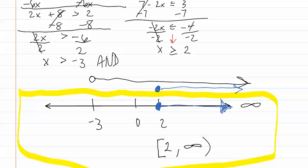Remember, when solving compound inequalities that are ANDs and they go in one direction, make sure to pick the overlapping portion, which also happens to be the smaller or shorter graph.